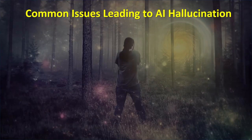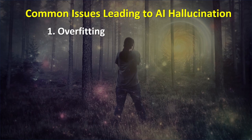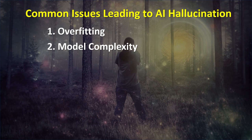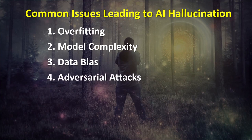Some of the most common issues that lead to an AI hallucination are: 1. Overfitting — when the AI model learns by memorizing the training data instead of generalizing based on it. 2. Model complexity — the AI model is so complex that the AI begins to imagine features or details in the data that are not actually there. 3. Data bias — the training data contains inaccuracies or is not representative of current thought. And 4. Adversarial attacks — input data is intentionally designed to trick the model into seeing something that is not there.